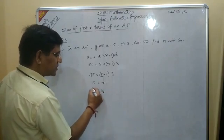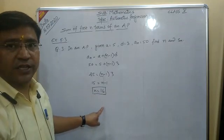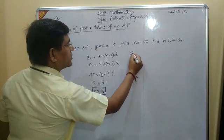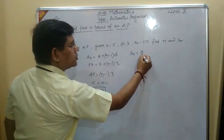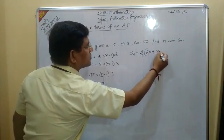This is the value of n. Now S_n equals n over 2 times (2a plus (n minus 1) into d).